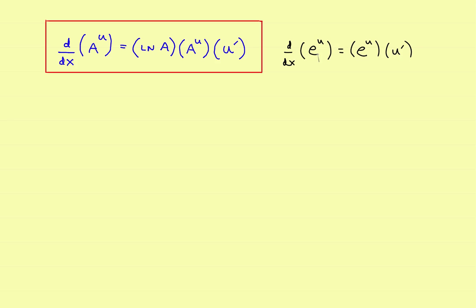The only difference between the e rule and this new a rule is that the new rule finds the derivative of any base other than e — for example, five to the u or seven to the u. Looking at the rule, it adds one extra part. You still have a to the u times the derivative of the exponent, but it adds a third part — we'll put it in red — to the definition.